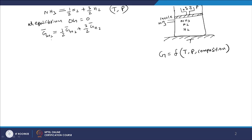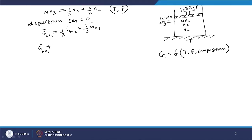The partial molar Gibbs energy of a component is always given with reference to a reference state. For that reference state, the value of the chemical potential is given by the symbol with a superscript 'not'. In the actual mixture we are considering, what would be its Gibbs energy is given by the reference value plus RT ln of the partial pressure of NH3. By telling about the partial pressure of NH3 in a gas mixture, we are connecting the actual composition of the mixture with the chemical potential.